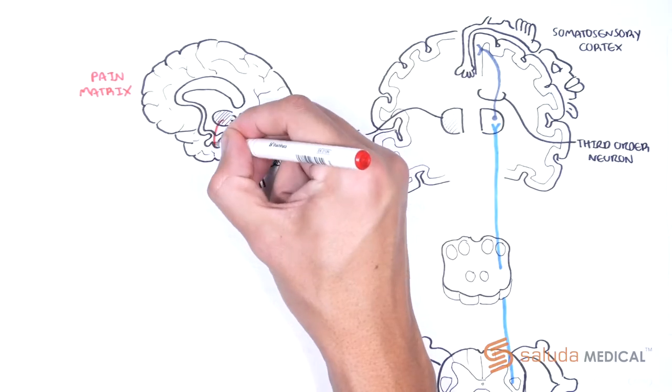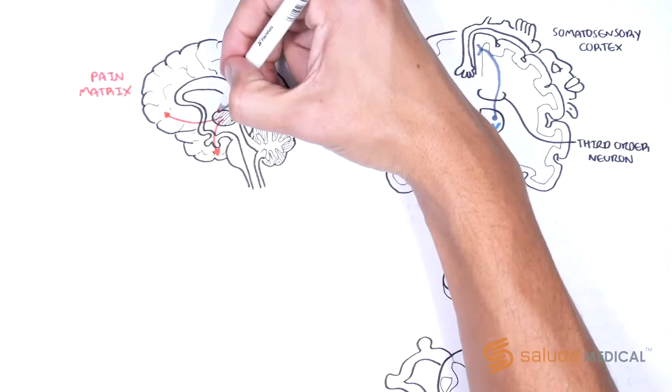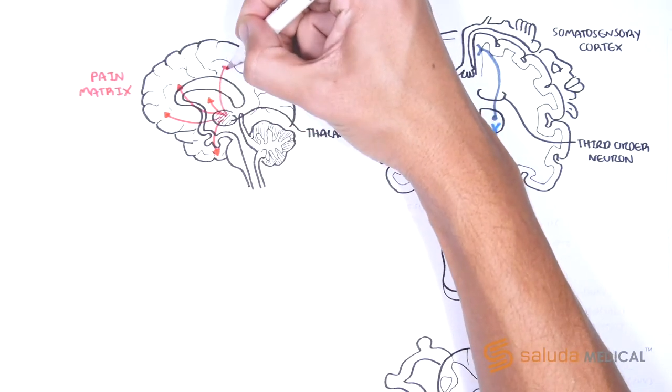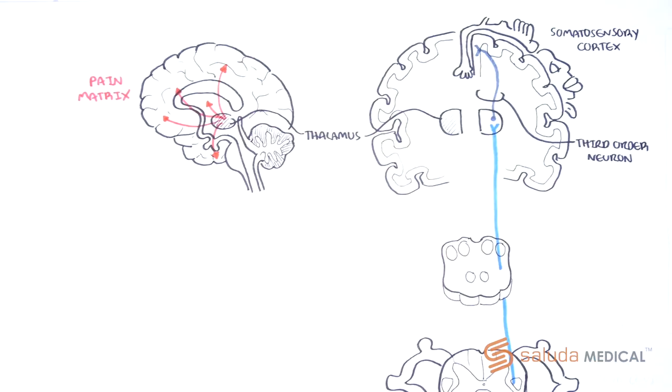These areas include the insula, the anterior cingulate cortex, the prefrontal cortex, and the limbic system regions such as the basal ganglia and the amygdala. The pain matrix is a highly complex system that is only partly understood. We will not go into the detail of this central processing system, but it is within this matrix that we experience the affective components of pain. The somatosensory cortex informs of the localization of the pain.